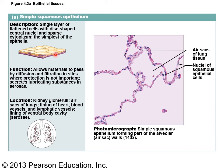Simple squamous epithelium is a single layer of flat cells. A classic example of where it's found is in the alveoli — the little air sacs in the lungs. It's found in other locations, but alveoli of the lungs is the key location to remember.